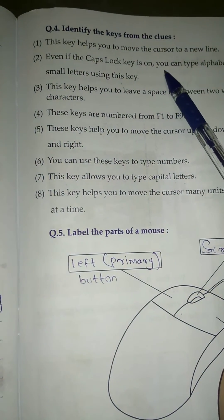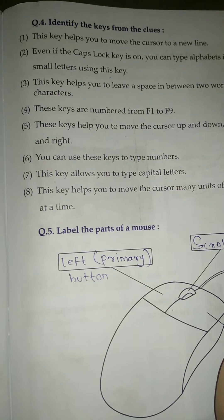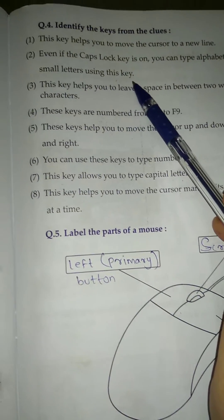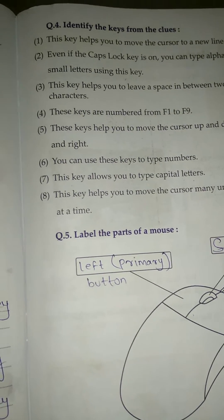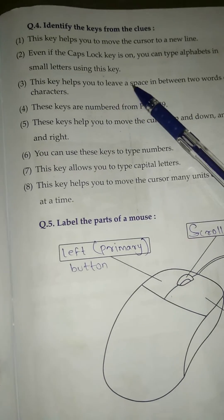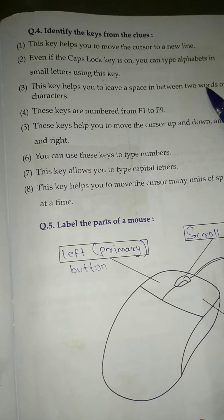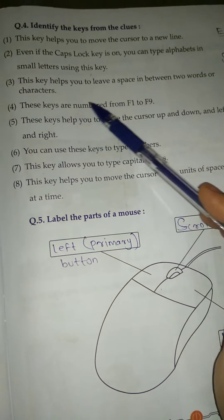Number 2, even if the Caps Lock Key is on, you can type alphabets in small letters using this key - Shift Key. Number 3, this key helps you to leave a space between two words or characters - Space Bar Key.